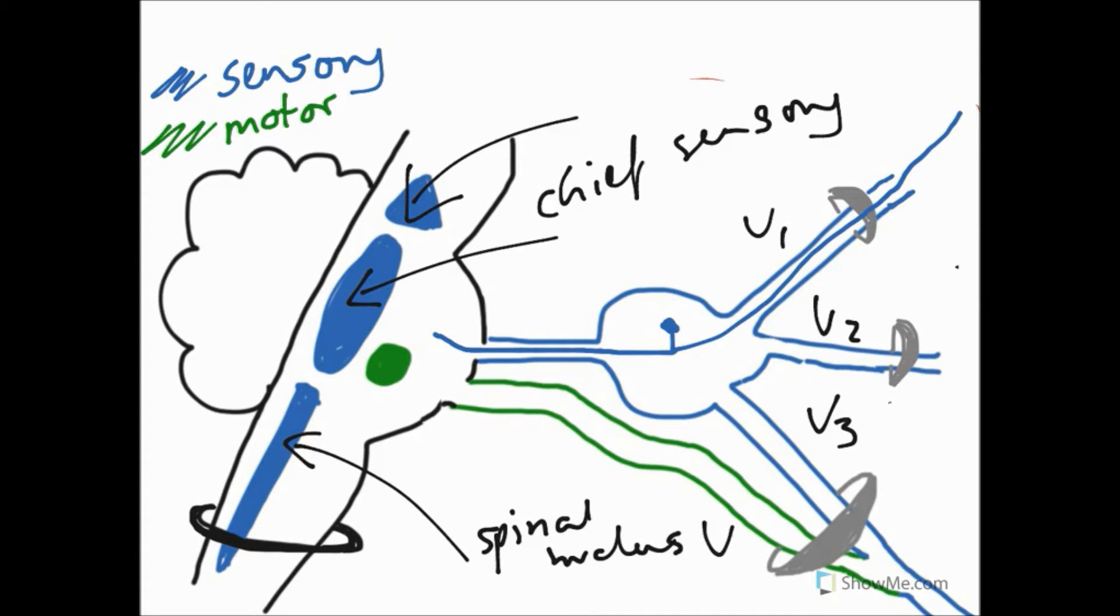And this here is our spinal nucleus five. And then the three of these, including the green motor nucleus, are going to comprise our trigeminal nuclear complex, as I'm sure you've heard Scott talk about.